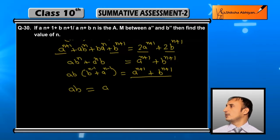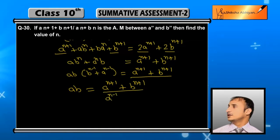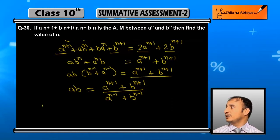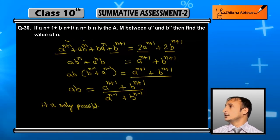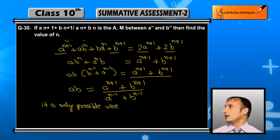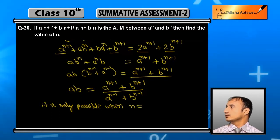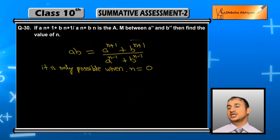So ab = (a^(n+1) + b^(n+1)) / (a^(n-1) + b^(n-1)). But ab is equal to this value only when n is equal to zero. So what value should n take here? n should be equal to zero — let's verify why.